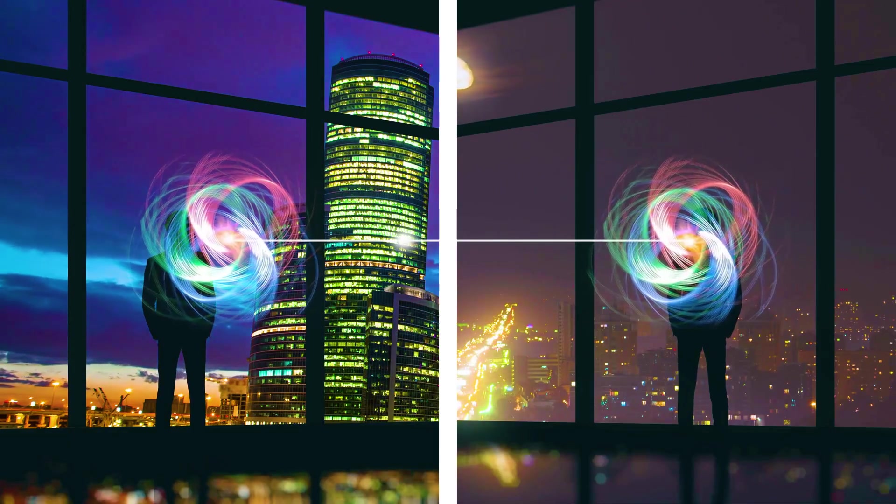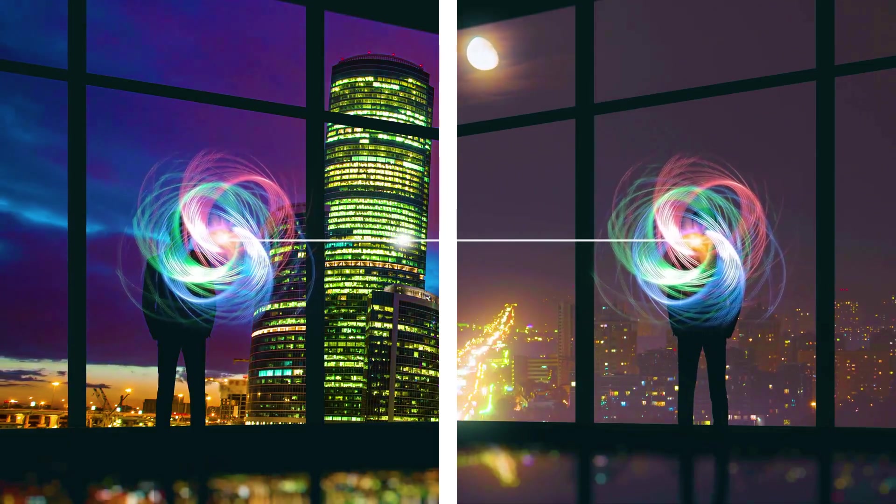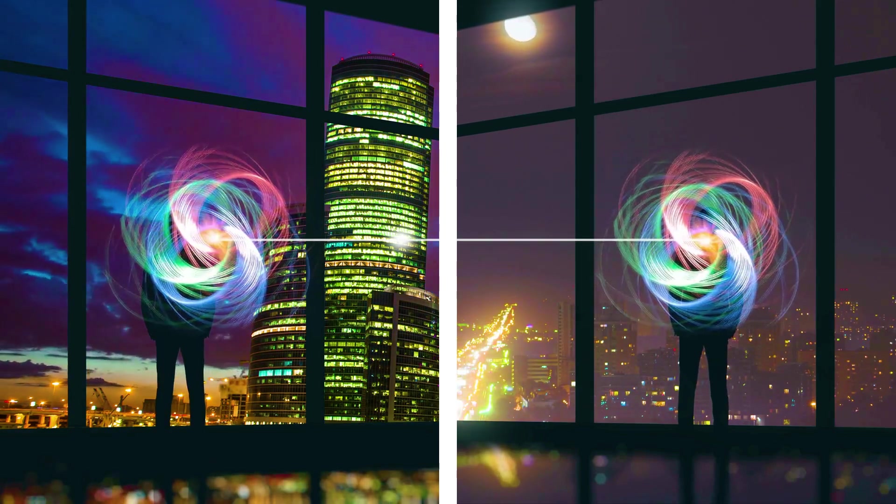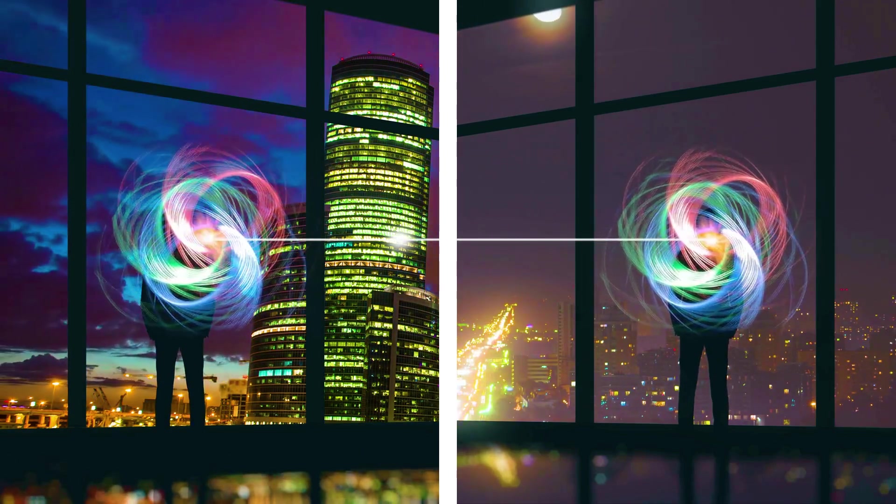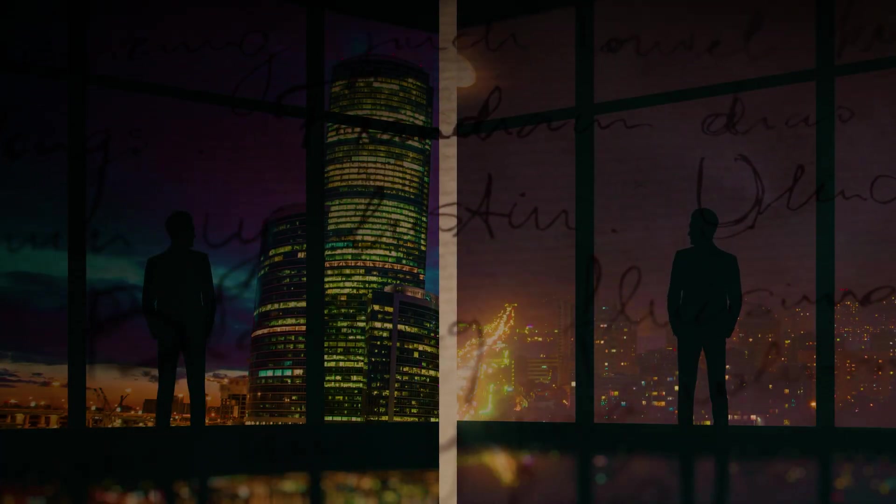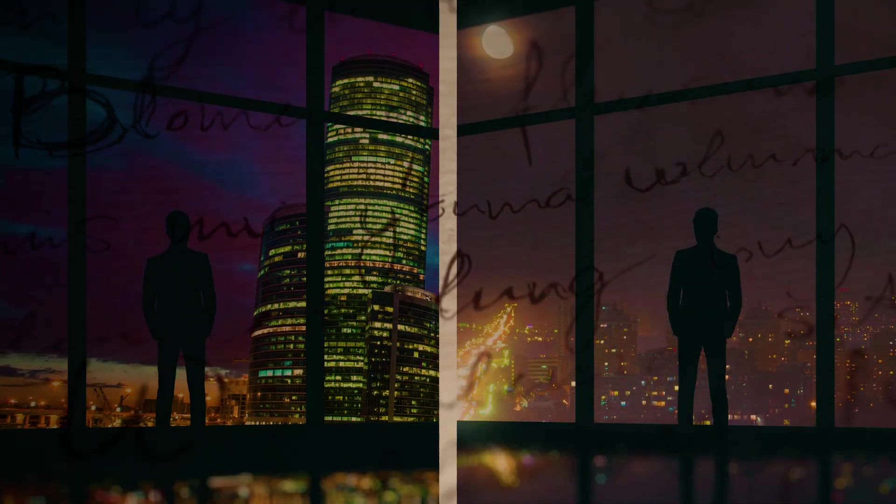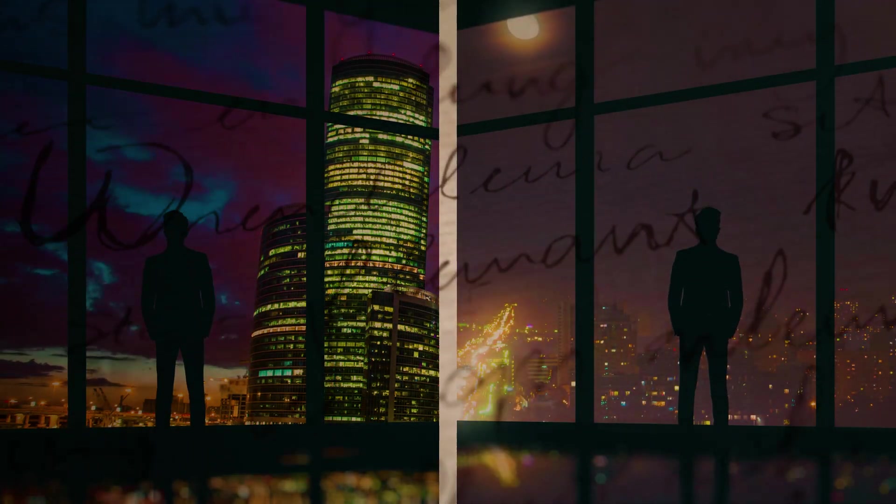Dude one then combines the particle he wants to teleport with his half of the entangled pair, and performs a special measurement on both particles. This measurement changes the state of the entangled pair in a very specific way, depending on the state of the particle he wants to teleport. Next, he sends the results of the measurement to dude two using regular communication, like a phone call or an email. This information doesn't actually contain the quantum state of the original particle, instead it's just some instructions for dude two on what he needs to do next.